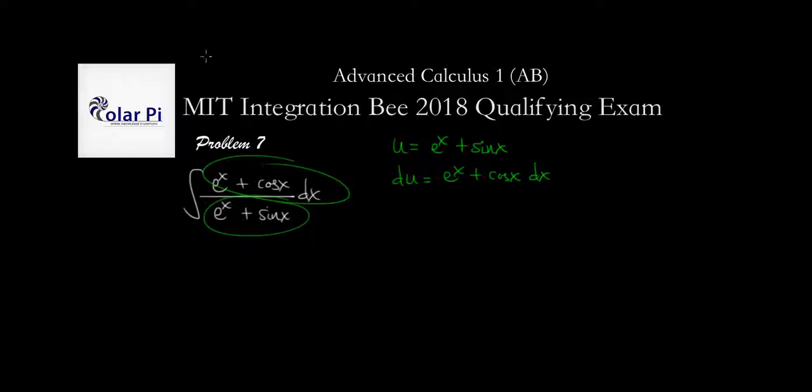All right how convenient. So our integral is the integral of, and then it's du because these two together make du, it's right here, and then the denominator is u so we have du divided by u.